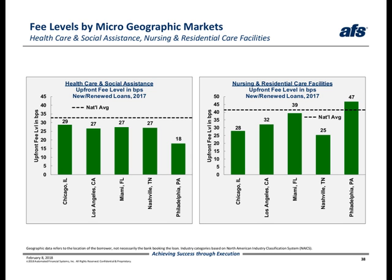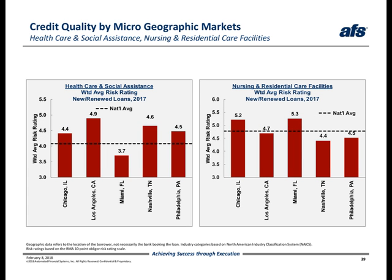A question we hear a lot from our clients is, are we leaving fees on the table? Sometimes we see industries with good spreads, but with very low fee levels. As you can see by the left-hand chart on this slide, all five of our selected geographies for healthcare reported upfront fee levels beneath the national average for the healthcare industry. Recall from the prior slide that for healthcare loans, Philly ranked lowest for spread pricing. And a similar result was observed here in terms of fee levels for the same metro. At the subsector level, though, the results are very different. If you look at the right-hand chart, we can see that Philadelphia ranked highest in terms of upfront fees for the nursing care subsector, with an upfront fee level well above the average for that subsector.